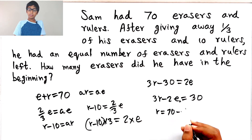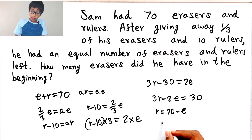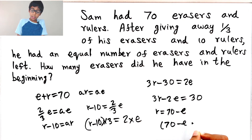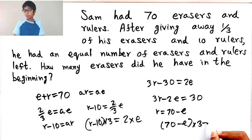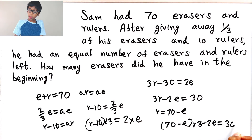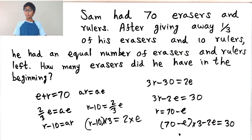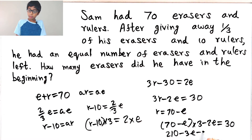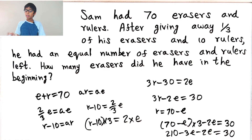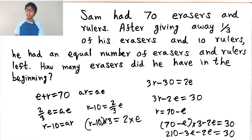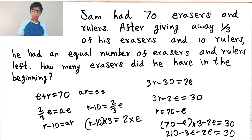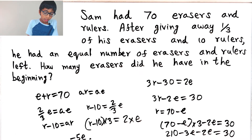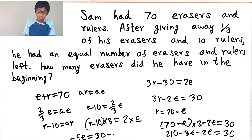So R equals 70 minus E. Let's substitute that into our equation: put brackets, (70 minus E) times three minus two E equals 30. So if we expand this, it will be 210 minus three E minus two E equals 30.